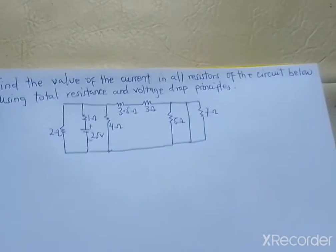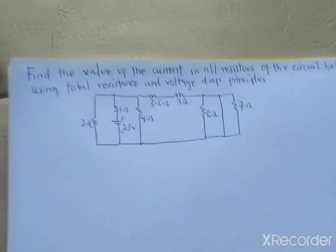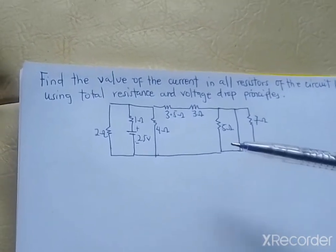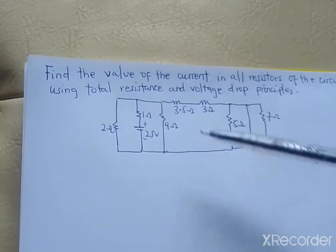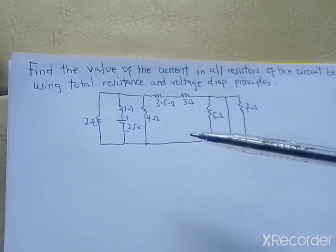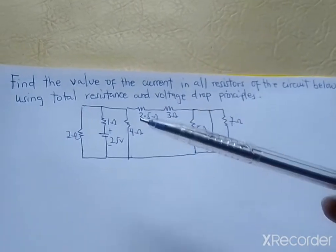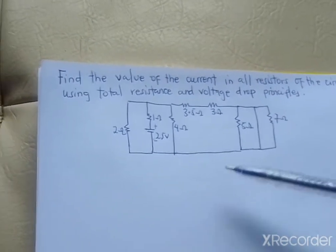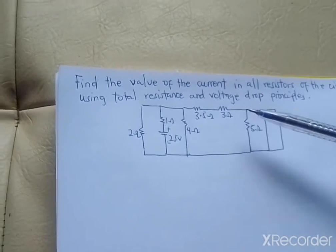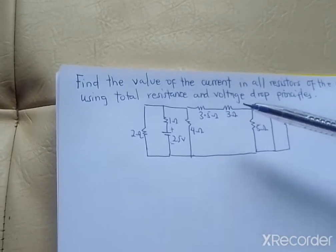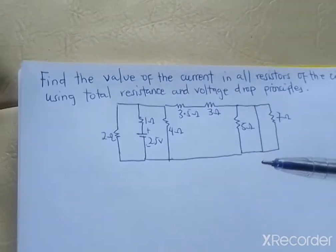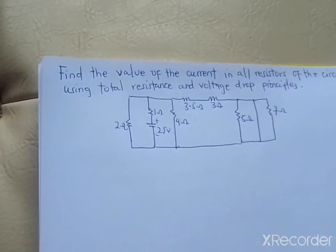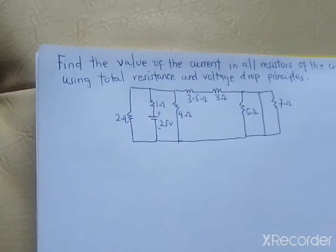Hello viewers, welcome to another section of my tutorial. I have a problem in applied electricity. We should find the value of the current in all the resistors in this circuit using the total resistance and voltage drop principles. The question has restricted us to these principles, meaning we are not supposed to apply Kirchhoff's laws or the current division rule.